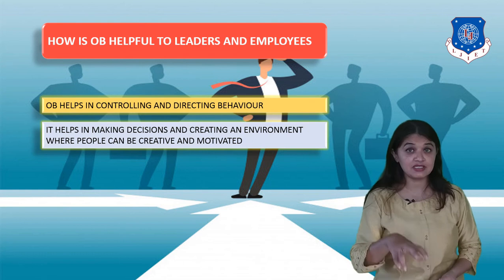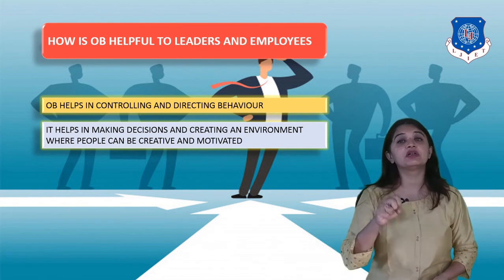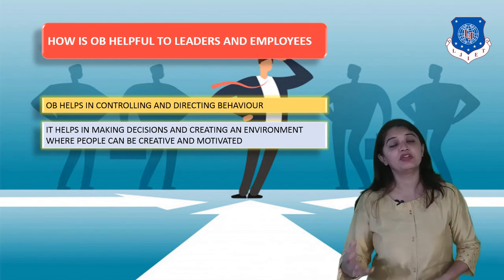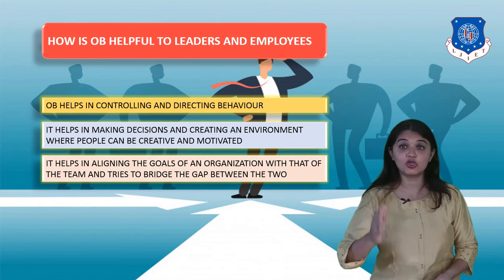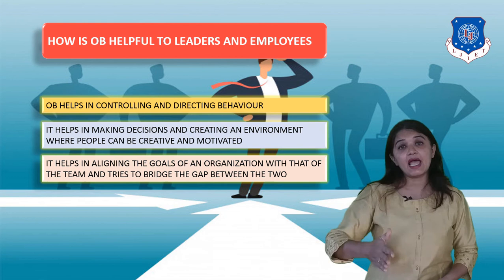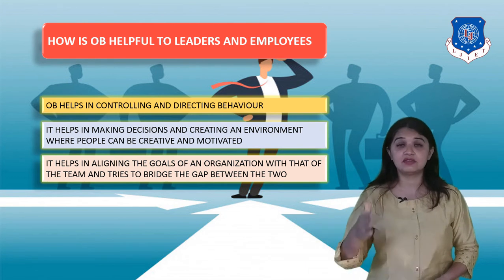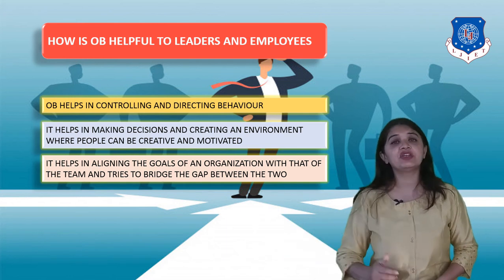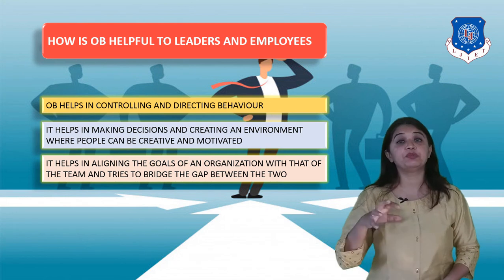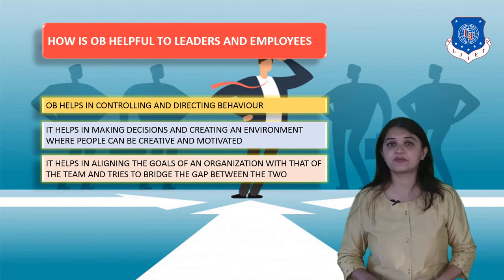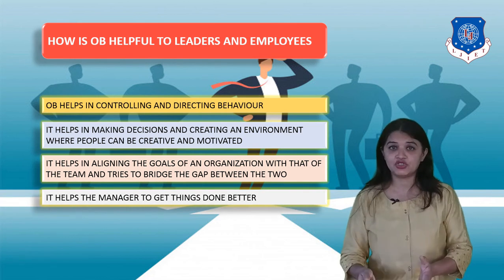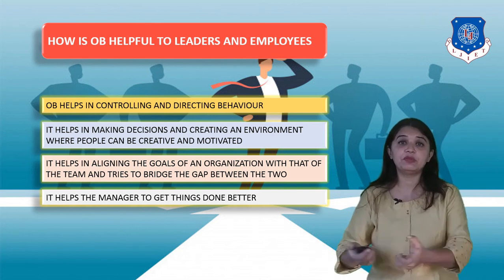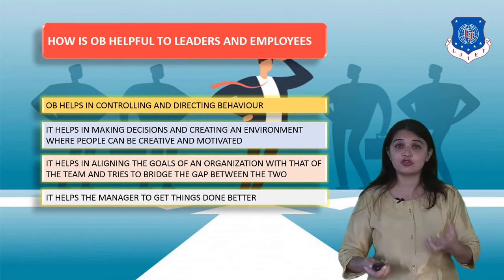OB helps in making decisions and creating an environment where people can become creative and motivated. When people become more creative and motivated, they will definitely become more effective. OB also helps in aligning the goal of the organization with that of the team and individuals. When the team's goal equals the organization's goal, the team will be motivated. OB bridges this gap. It also helps the manager in getting things done in a better way, because the manager knows how to make people behave in a certain manner.